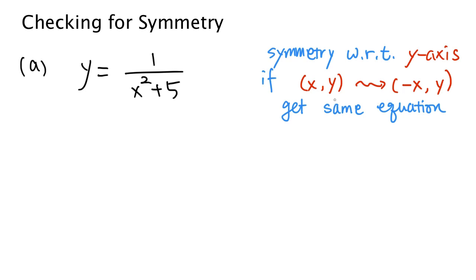The theory says that if we replace x in the equation with negative x — basically keep y the same but change the sign of x — and as a result we somehow get the same equation as the original, then the graph of that equation has symmetry with respect to the y-axis. The example on this side has this property, so let's try to verify that.